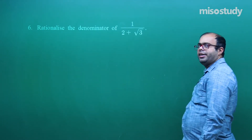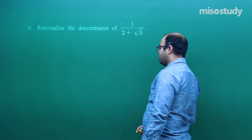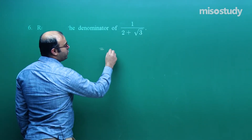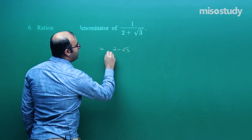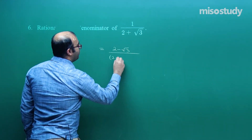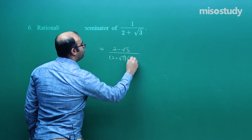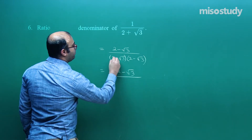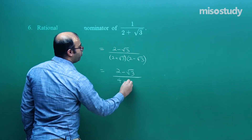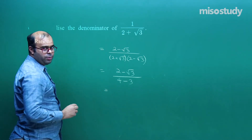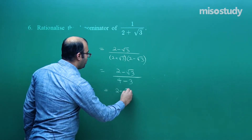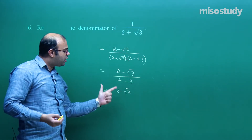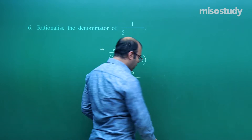Next question: rationalize the denominator of 1/(2 + √3). Right now the denominator is irrational. We multiply numerator and denominator by the conjugate (2 − √3). The numerator becomes (2 − √3) and the denominator becomes 2² − (√3)² = 4 − 3 = 1 using the (a − b)(a + b) formula. So the result is (2 − √3)/1 = 2 − √3, with the denominator rationalized.